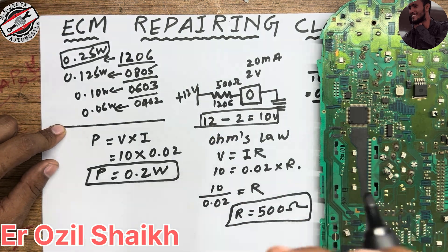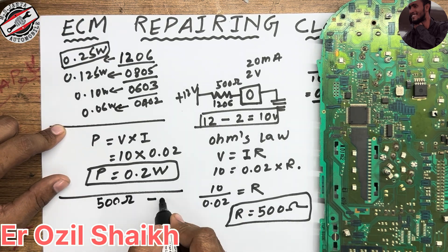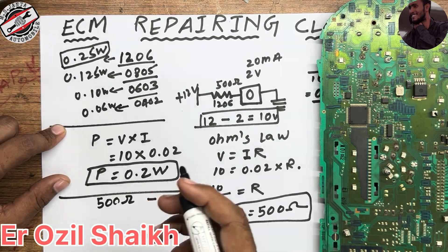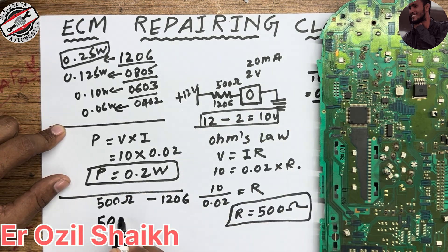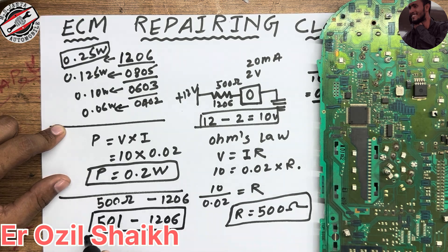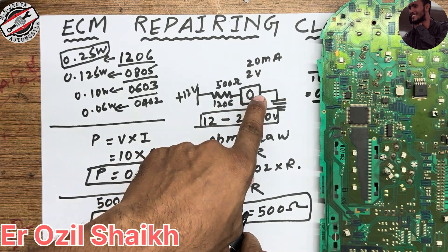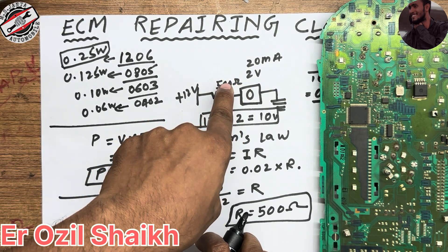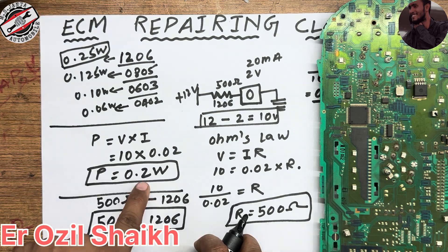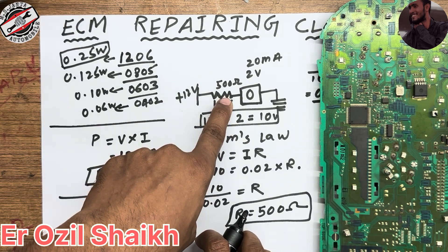So if you want to order from the shopkeeper, you have to say 500 ohm, size 1206. If they ask for the resistance code, you tell them 501, size 1206. So to glow a 2 volt LED, you need 500 ohm and 0.2 watt resistance.